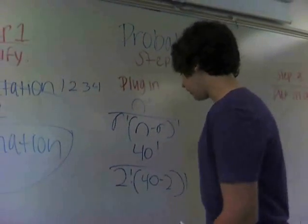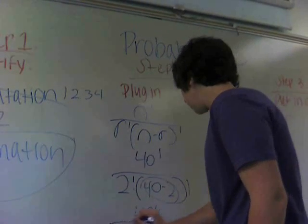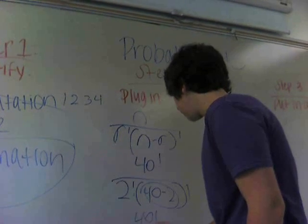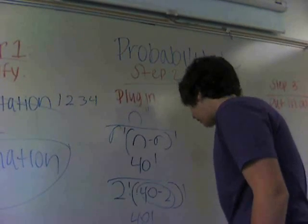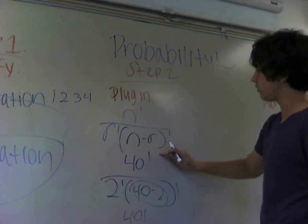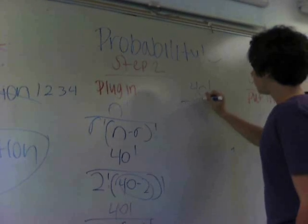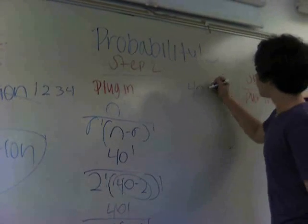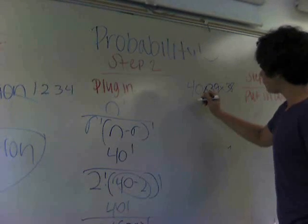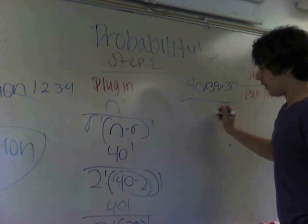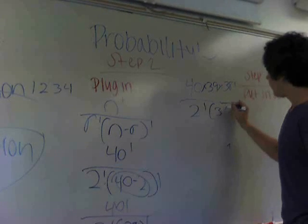We're going to go ahead and simplify it. It's going to be 40 factorial divided by 2 factorial times 38 factorial. So what we're going to do is we're going to have our 40 factorial, which is 40 times 39 times 38 factorial, divided by 2 factorial times 38 factorial.